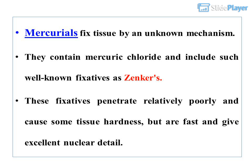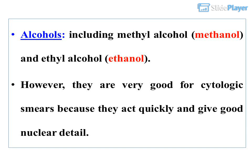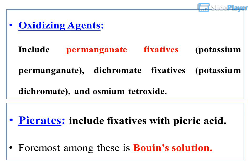Mercurials fix tissue by an unknown mechanism. They contain mercuric chloride and include well-known fixatives such as Zenker's. These fixatives penetrate relatively poorly and cause some tissue hardness, but are fast and give excellent nuclear detail. Alcohols, including methyl alcohol (methanol) and ethyl alcohol (ethanol), are very good for cytologic smears because they act quickly and give good nuclear detail. Oxidizing agents include permanganate fixatives such as potassium permanganate, dichromate fixatives such as potassium dichromate, and osmium tetroxide.